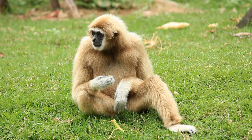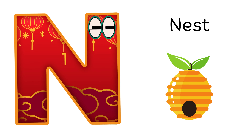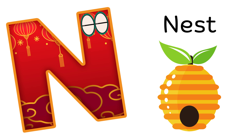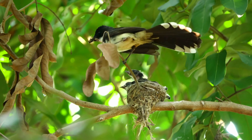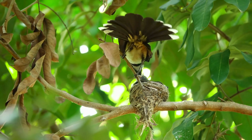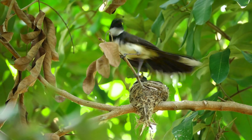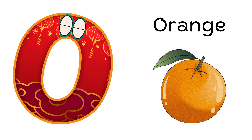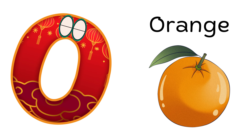N is for Nest. N, N, Nest, N, N, Nest, N, Nest. O is for Orange. O, O, Orange, O, O, Orange, O, Orange.